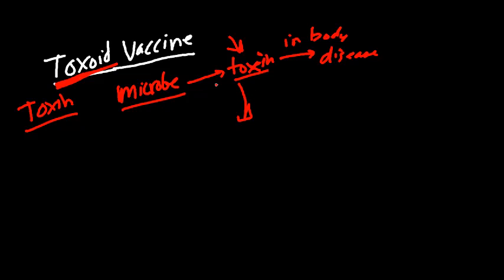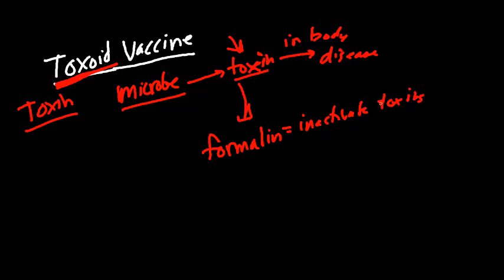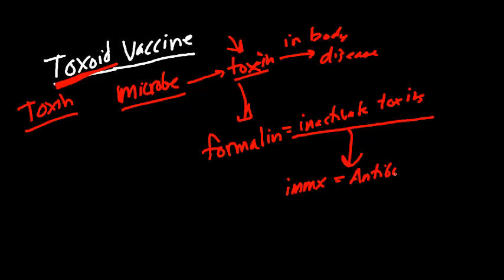We take this microbe, gather some of its toxin, and then inactivate it. Before we used heat, chemicals, or radiation. It's been found that formalin is excellent in inactivating toxins. We're going to use formalin, then take that inactivated toxin and inject it into the body. Once inside, our immune system recognizes this inactivated toxin and forms antibodies. So we form antibodies against this toxin — we have preformed antibodies in the bloodstream.